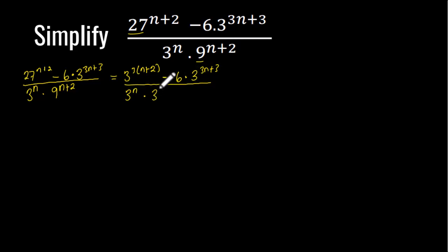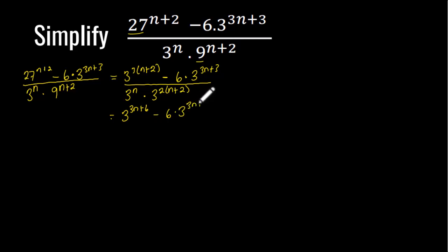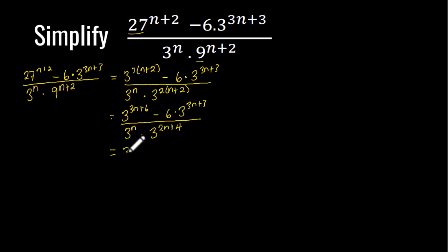9 can be expressed as 3 exponent 2, multiplied by the exponent (n+2). Expanding the exponent, that gives us 3 exponent (3n+6) minus 6 times 3 exponent (3n+3), divided by 3 exponent n times 3 exponent (2n+4). This is the same as 3 exponent (3n+6) minus 6 times 3 exponent (3n+3), divided by the denominator terms.